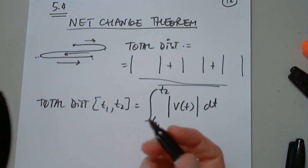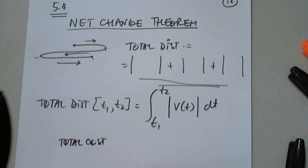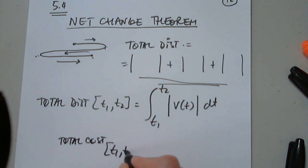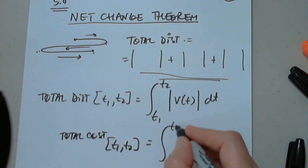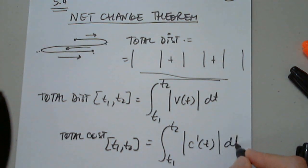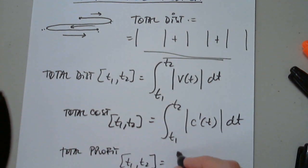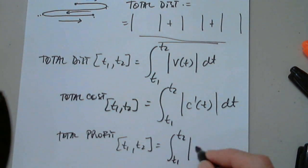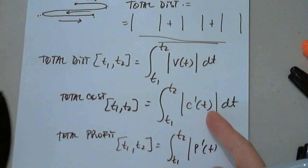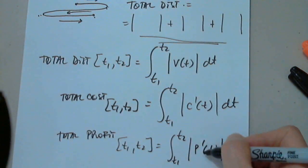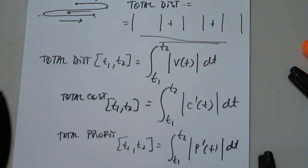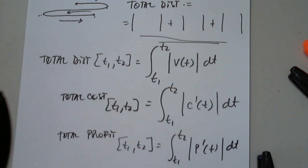The same idea applies beyond velocity. Total cost between time t1 and t2 is the definite integral from t1 to t2 of the absolute value of C-prime of t dt. Total profit is similarly the definite integral from t1 to t2 of the absolute value of the rate of change of profit dt. Marginal profit, marginal cost — they're all the same concept. I just wanted to identify those and ask a couple of questions, then look at applications.